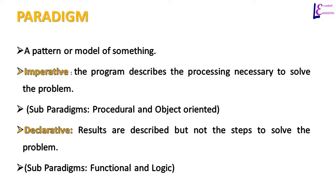Java is a modern object-oriented programming language with some procedural features, and C++ is a procedural language with some object-oriented features.